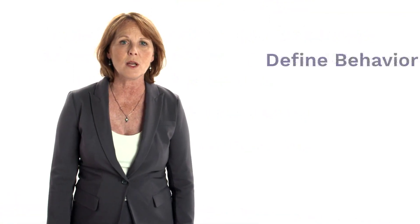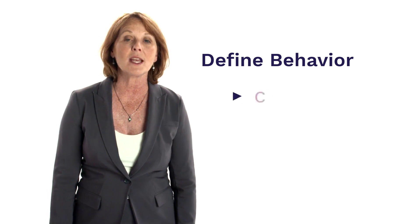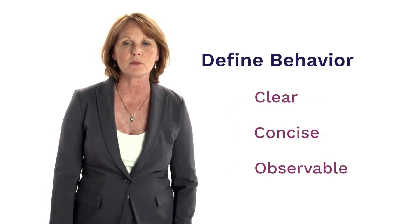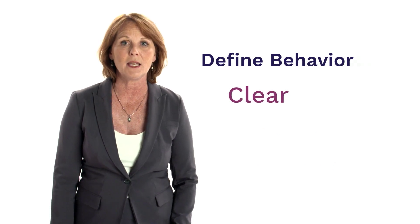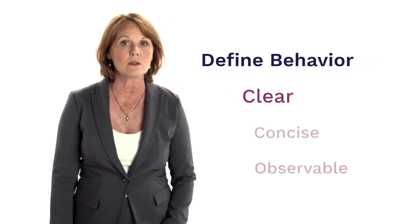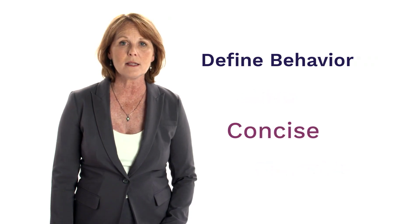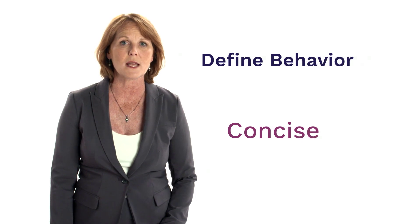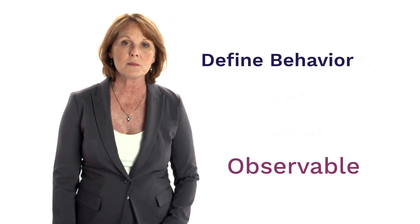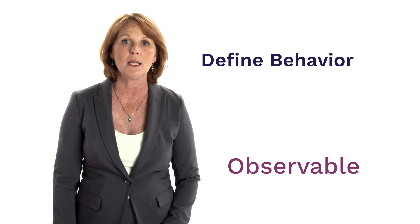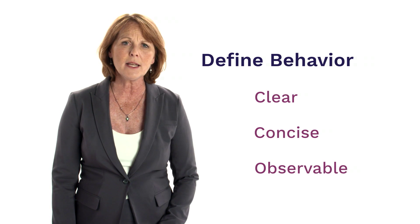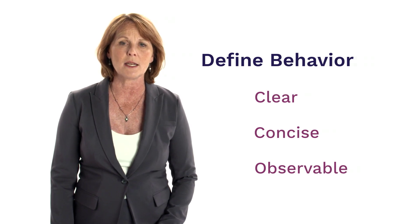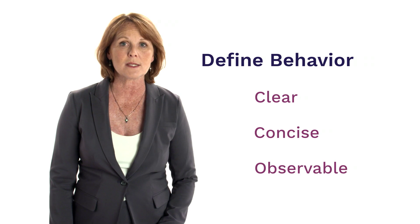Once we've determined which behaviors are of greatest concern, we need to define those behaviors in clear, concise, and observable terms. Clear means that the child's behavior would be obvious to anyone observing, even someone who doesn't know the child. Concise means it is described in as few words as possible. Observable means the behavior is described in terms of exactly what the child says or does. In defining behavior, we want to avoid labels and assumptions, just focusing on the facts.